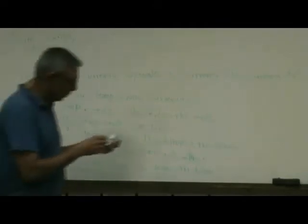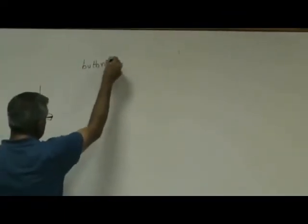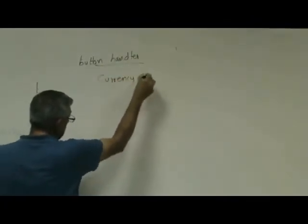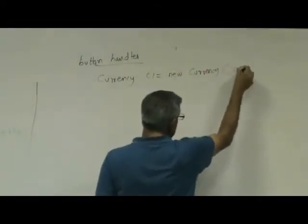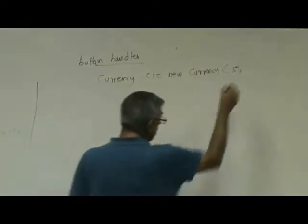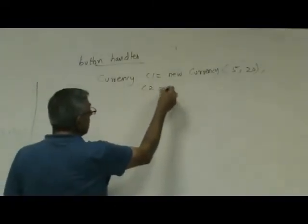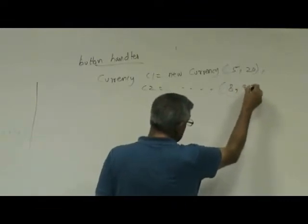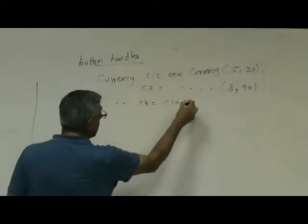So to clarify what is left-hand side, what is right-hand side, okay, so your test code will look something like this. You will do, in some kind of a button handler, you will say currency, let's say C1 equal to new currency, let's say 5 comma 7, so $5, or let's make it 20 cents, $5.20, right? Currency C2 equal to, let's say, $8, let's say 90 cents, okay? So then if you did currency C3 equal to C1 plus C2, right?